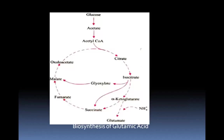The biosynthesis of glutamic acid follows a pathway where glucose is converted to acetate, then to acetyl coenzyme A, then through citrate and isocitrate to alpha-ketoglutarate, and in the presence of ammonia to glutamate. The pathway also proceeds through succinate, fumarate, malate, and oxaloacetate, from which addition of ammonia can yield glutamate.